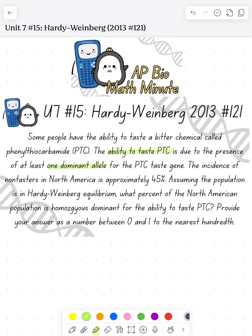We have some people who can taste a certain bitter chemical. The ability to taste that chemical requires one dominant allele. We see that non-tasters, so homozygous recessive, make up 45%. We need to figure out what percent are homozygous dominant and give that number to the nearest hundredth.